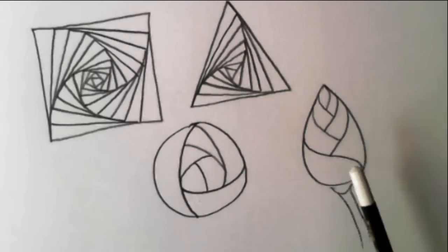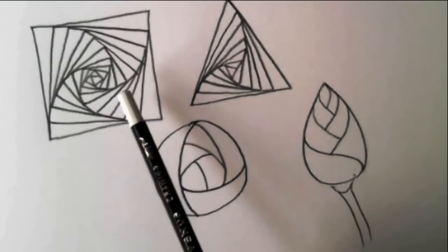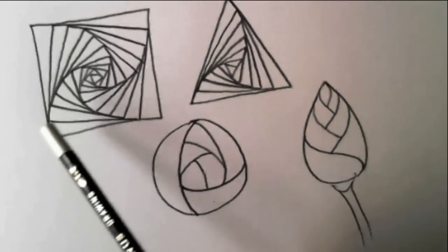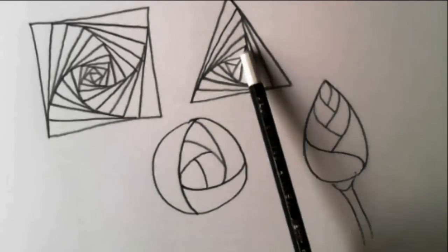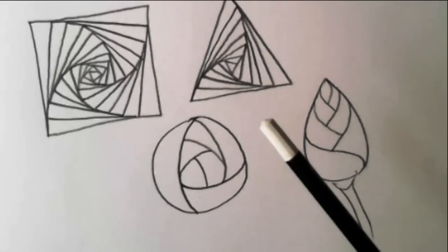So, now what I'm going to do is to show you what happens when we put these into a grid of some sort. We could make a triangular grid, or a square grid, or a hexagonal grid, or even a random grid.